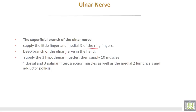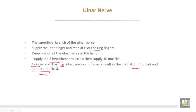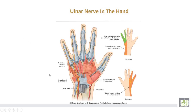The superficial branch of the ulnar nerve supplies the little finger and medial half of the ring finger. The deep branch of the ulnar nerve in the hand supplies the three hypothenar muscles, all interossei (four dorsal and three palmar), the medial two lumbricals, and the adductor pollicis muscle.